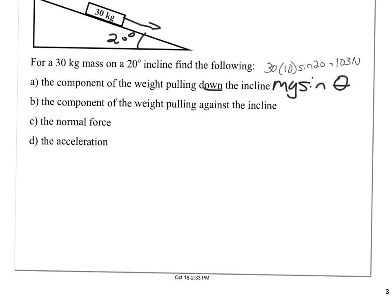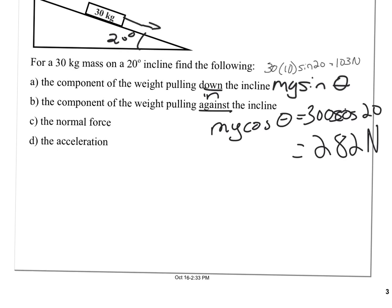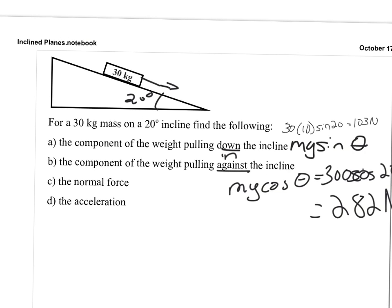And we're going to do the same thing with the component of the weight point against the incline or into the incline. So that is going to be mg cosine of theta, which is going to be 30 times 10, which is 300 times the cosine of 20. And that comes out to be 282-ish newtons. All right. So we got our two components of the weight. Let me kind of draw those on there. We've got 102 newtons. And we've got 282 newtons.